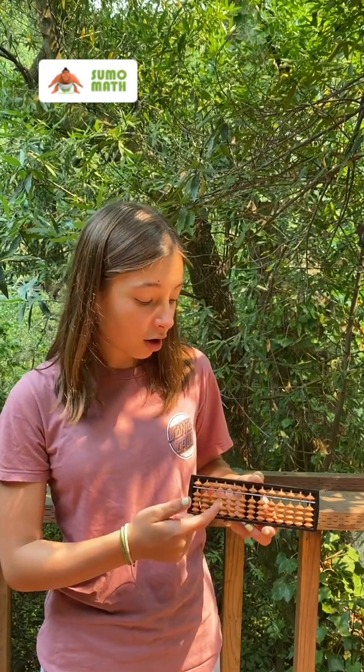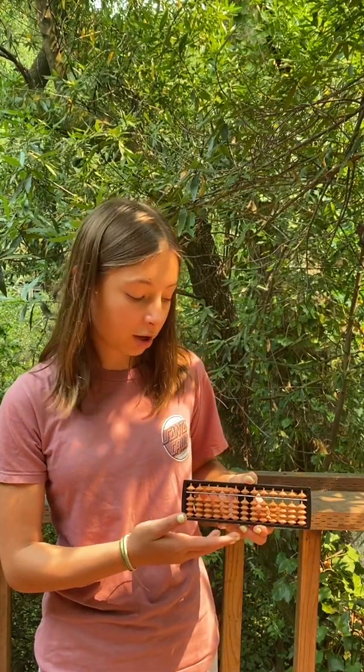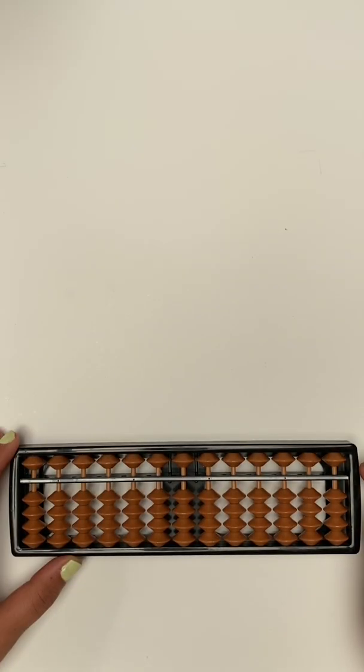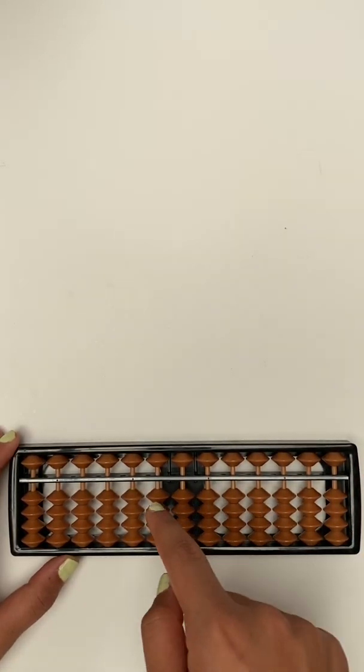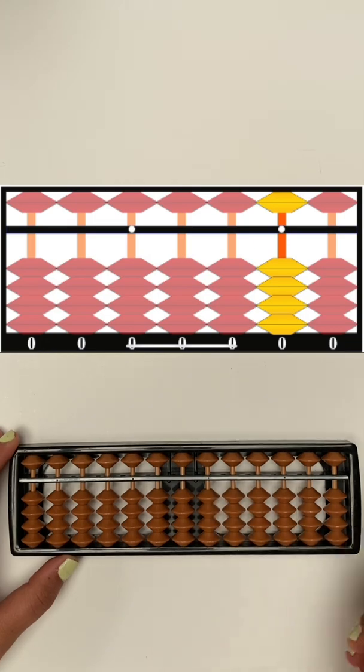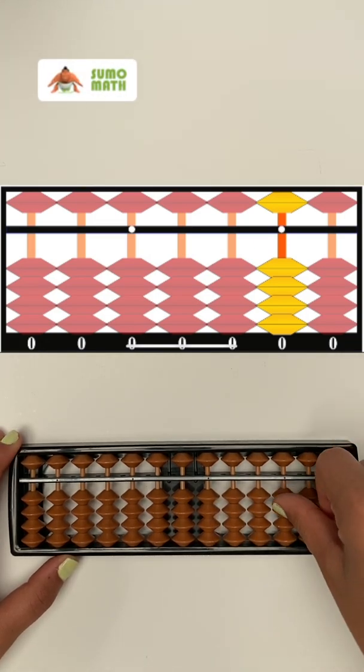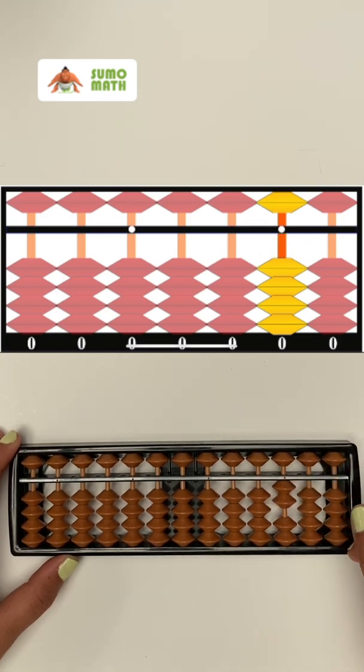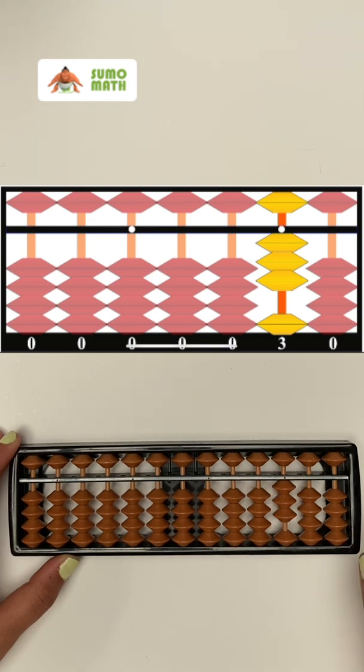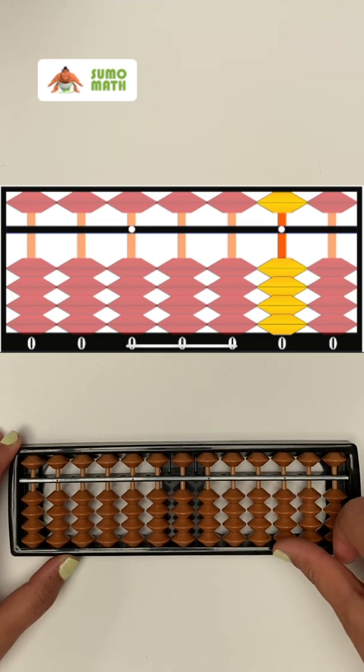These beads are called earthly because they are on the bottom and closer to the earth. In order for a bead to count, it has to be touching the reckoning bar directly or through the bead above it. So, this is 1, this here is 2, this is 3, and this is 4.